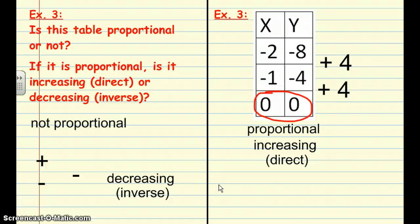So again, the big thing to look at is do you go up or down by the same amount here? And do you have the coordinate pair (0,0)? Both things have to be true in order to be considered proportional. If both are not true, then it's not proportional.